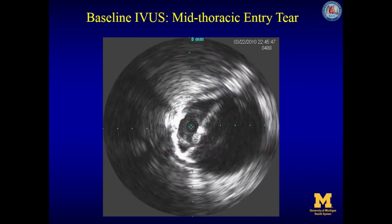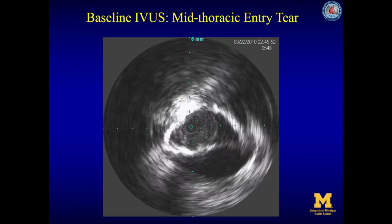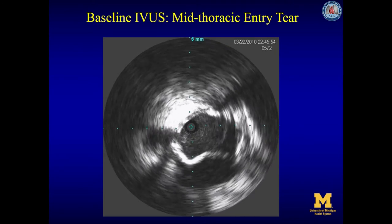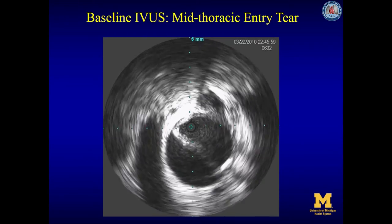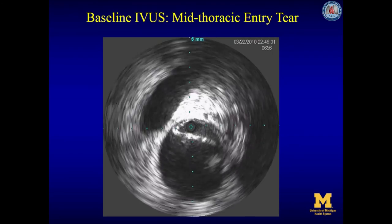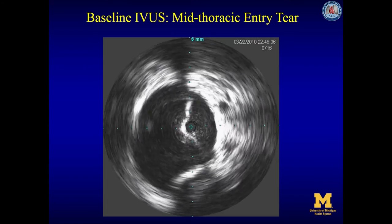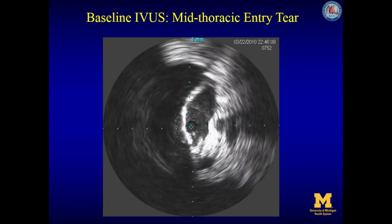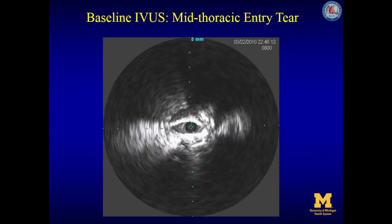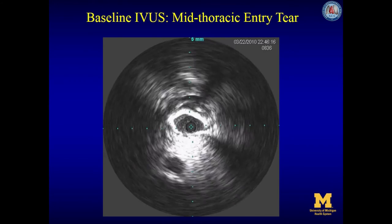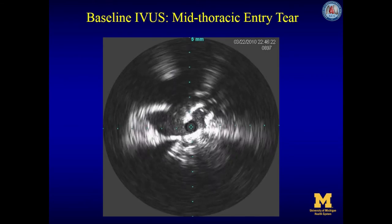Here is the celiac artery coming off at 9 o'clock. The superior mesenteric artery is coming off at 9 o'clock, and there is the right renal artery coming off at about 5 o'clock from the true lumen. The left renal vein is crossing from the left side of the screen, and here we are in the infrarenal aorta with a collapsed atherosclerotic true lumen. Eventually we go further down and enter the left common iliac artery.